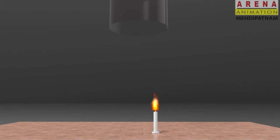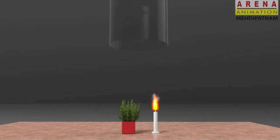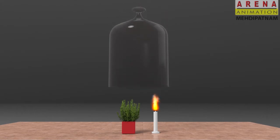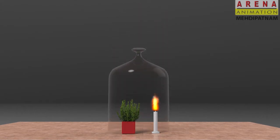Experiment 2: Light up the candle first. Place a mint plant beside the burning candle. Now keep the bell jar on top of them as shown in the video.